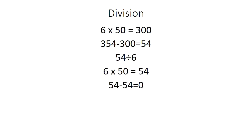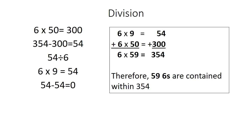Let's tie everything together. We know that 6 times 9 is 54, and 6 times 50 is 300, which means that 6 times 59 is 354, because 50 plus 9 is 59. Therefore, there are 59 6s contained within 354.